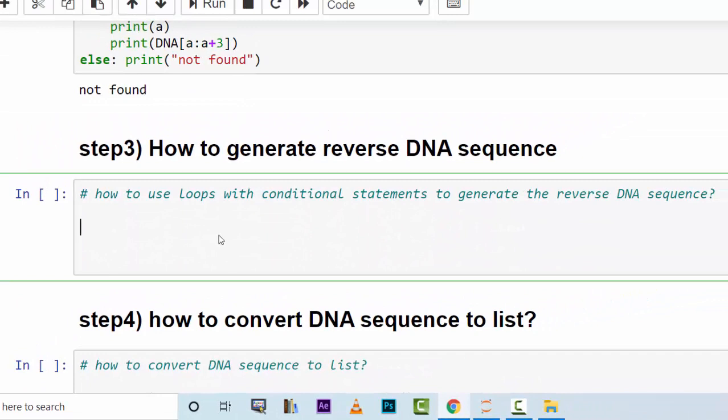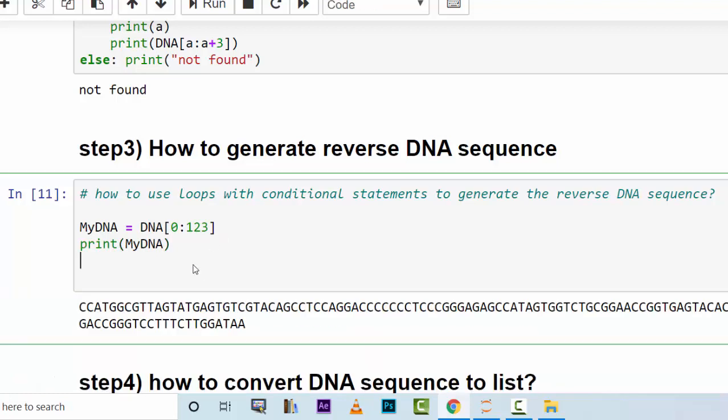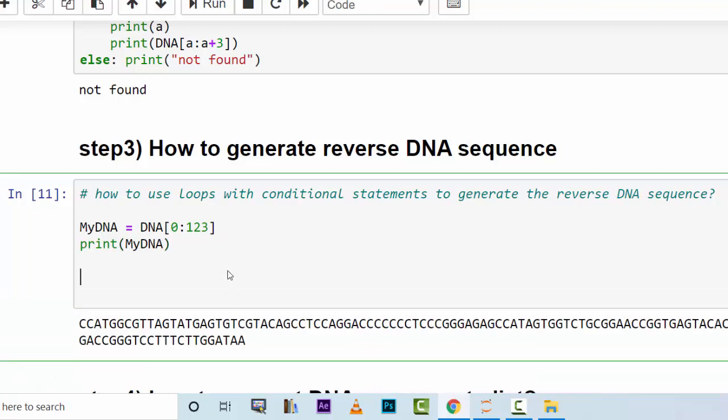There is something called loop, and there are two types of loops. One of them is called for loop, and the other is called while loop. How to use those to generate something like a reverse DNA sequence? Let's say myDNA is equal to DNA from 0 to 123 to the first occurrence of this stop codon, and we want to show this one as well as its reverse. So print myDNA. This is the DNA sequence, and we want to reverse this.